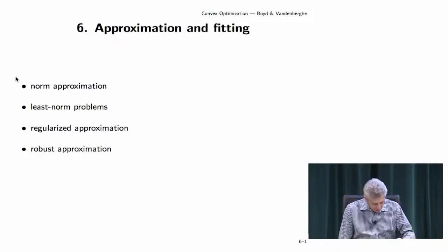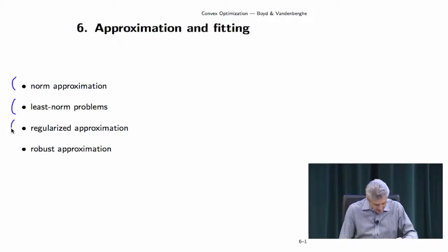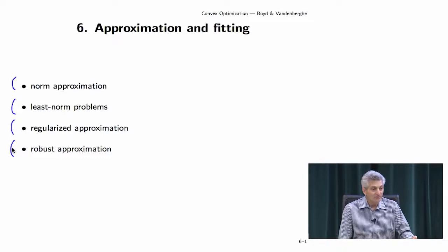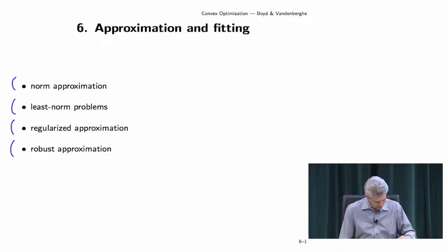We'll start with norm approximation, and then something which is a vague dual of it — least norm problems. And then something that combines both — regularized approximation — and then we'll look at robust approximation. This is relatively new; this is stuff from the last couple of years or last decade or so.